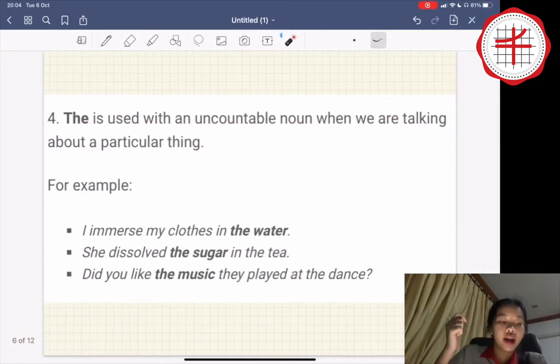Number four, the is used with an uncountable noun when we are talking about a particular thing. For example, I immersed my clothes in the water. She dissolved the sugar in the tea. Did you like the music they played at the dance?